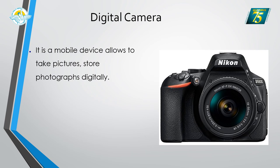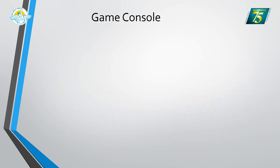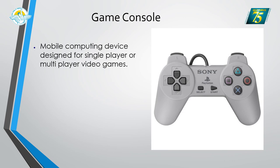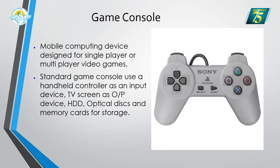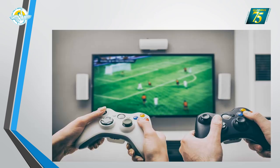The digital camera is a mobile device that allows you to take pictures and store photographs digitally. Nowadays, digital cameras are Wi-Fi enabled, so you can download images directly to your computer's hard disk. Then we have the game console — a mobile computing device designed for single or multiple player video games. It uses a handheld device as input, a TV as output, and memory cards for storage. Popular models include the MS Xbox 360 and PlayStation.